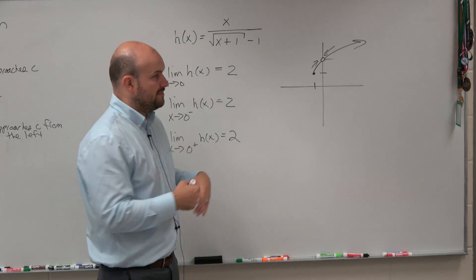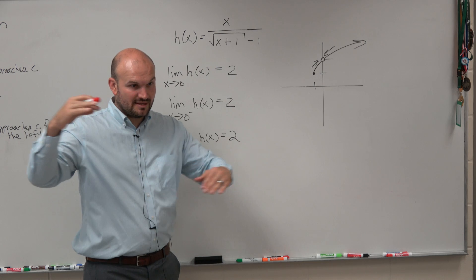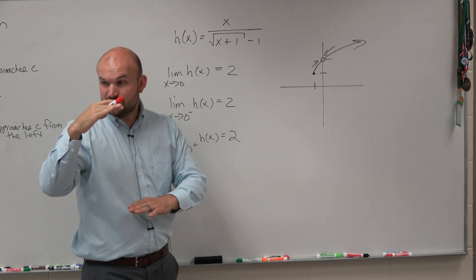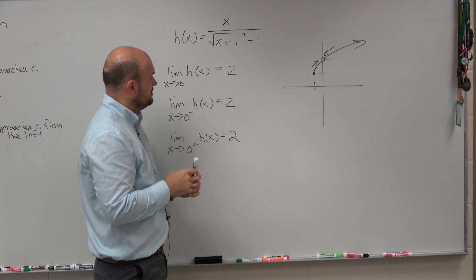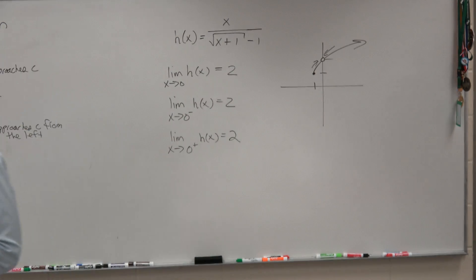OK? Remember, like the absolute value 1 over x, they went to different, the left and right hands were different. So that means the general limit didn't exist. OK? So let's change this up a little bit.